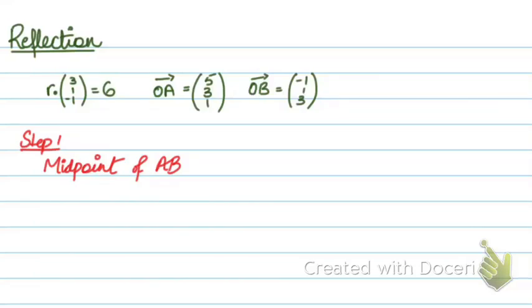Alright, this shall be the last video for vectors. The last concept or the type of question that can show up is you have to show reflection between two points. By reflection I mean that say we have two points, OA and OB. I have to show that OB is basically a reflection of the point OA through the plane. Basically the plane acts as a mirror and reflects OA across all the way across to OB.